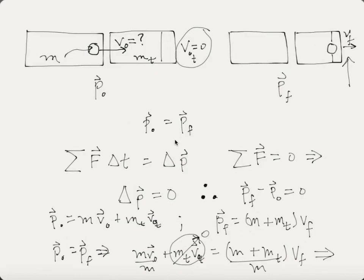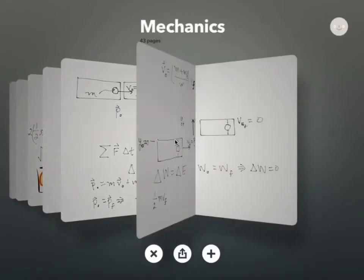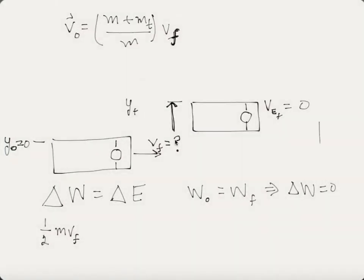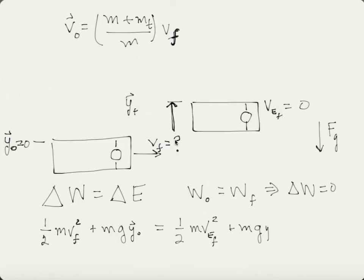Notice that when the pendulum rises, we can't use conservation of momentum because there's now a gravitational force acting downward — the net force on the system is no longer zero. So we use conservation of energy instead. The energy equation is: ½m·v_f² + mg·y_initial = ½m·v_energy_final² + mg·y_f.